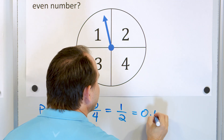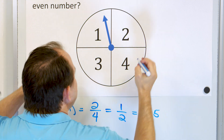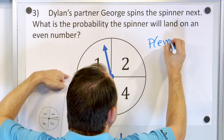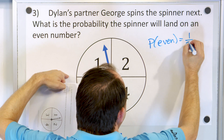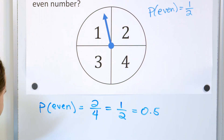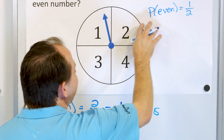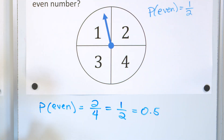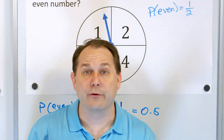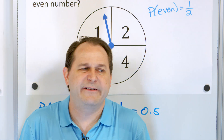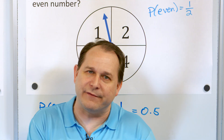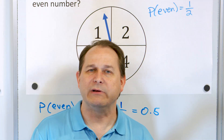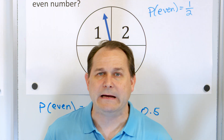One half works out to 0.5. So the probability of landing on an even position is one half, which is 0.5 or 50%. What does this mean? If I spin the spinner a thousand times and multiply by one half, I'd expect to land on even numbers 500 times.